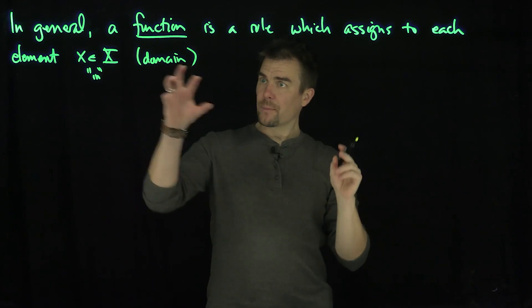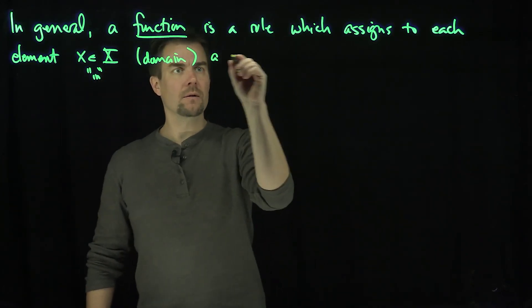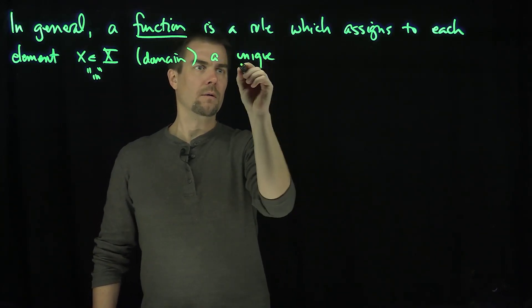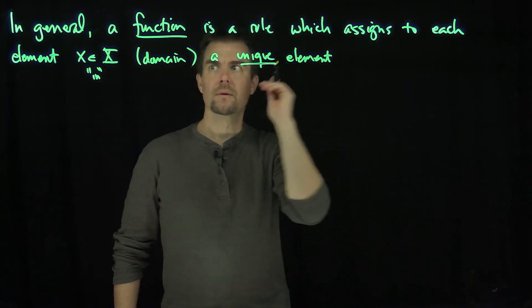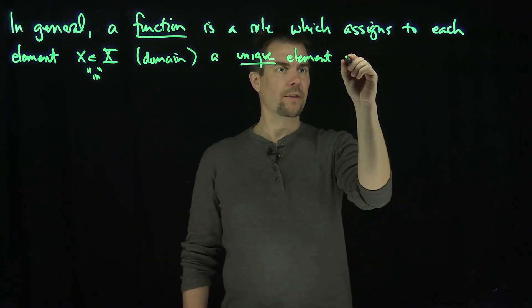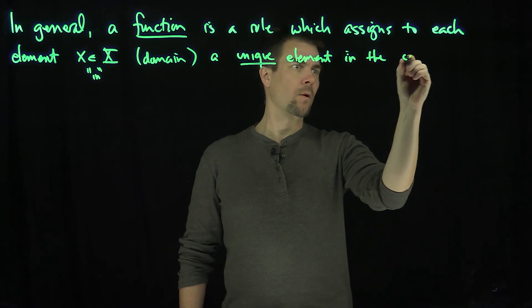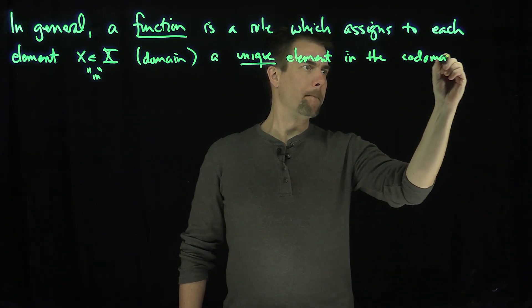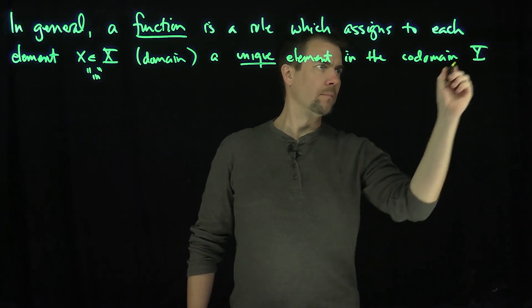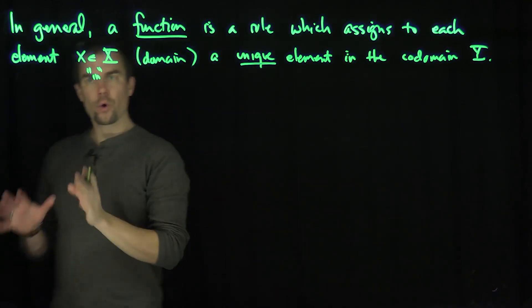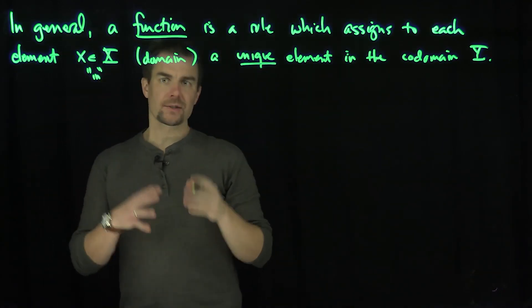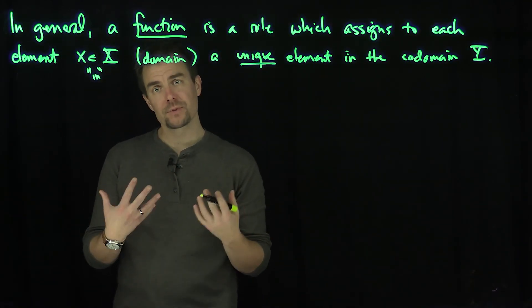It assigns to each element in the domain a unique element in the codomain. Now, we're going to use this primarily in the case when X and Y are either the real numbers or subsets of the real numbers.